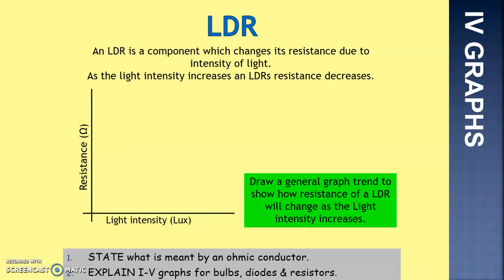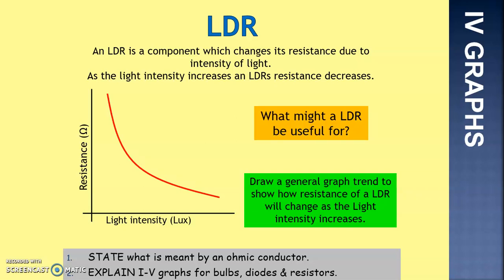An LDR is a component which changes resistance due to the intensity of light. As the light intensity increases, the resistance decreases. Draw that axis and give a general trend for how the LDR changes as light intensity increases. LDRs are useful for detecting movement and changes in the environment — when the light changes, the resistance changes and can trigger something else.